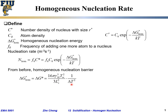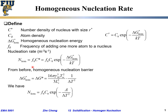A smaller barrier means a higher probability of overcoming it, and therefore a higher nucleus density. Substituting ΔG*_homo into the nucleation rate equation, the homogeneous nucleation rate N_homo equals f0 times C0, with ΔG*_homo now replaced by a constant divided by ΔT².